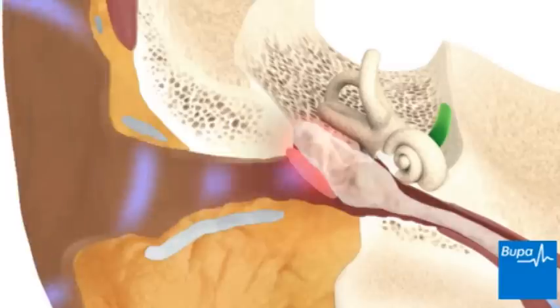The fluid makes it much more difficult for the sound waves to pass through your ear canal. It also prevents the eardrum and ossicles from vibrating properly. So, a child with glue ear may have some hearing loss.